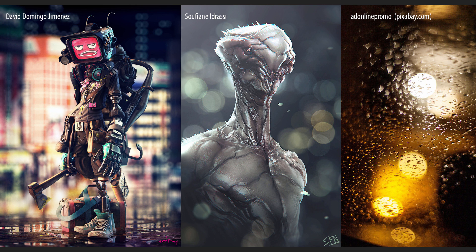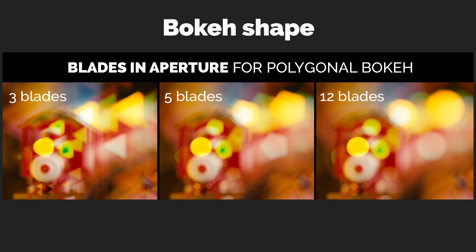So those out of focus points of light can be of different shapes. In photography it depends on the number of blades in the aperture. Of course, in Blender we don't have an aperture, but we're still able to simulate it. And as you can see, we can control the shape of the highlights.